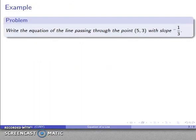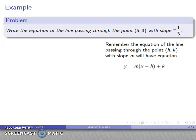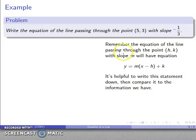So, for example, let's write the equation of the line passing through the point 5, 3 with slope negative 1/3. So again, I can write down the equation. I have the line passing through the point h, k with slope m. I can write down the equation.